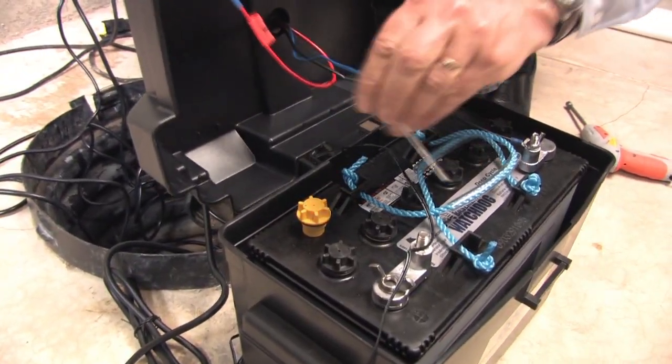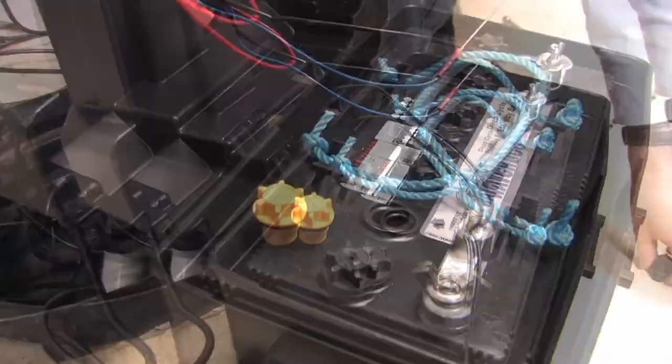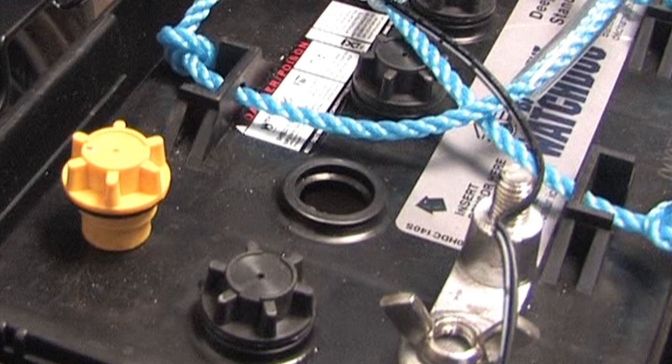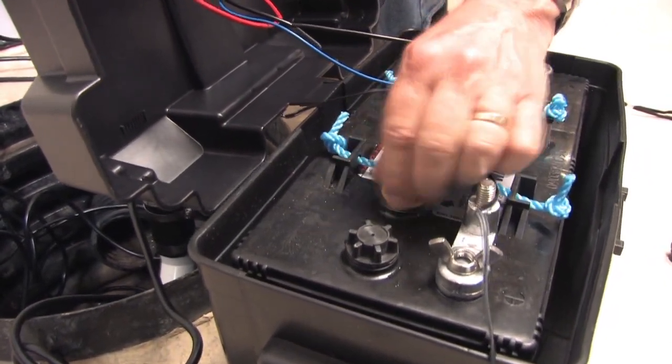To install the fluid sensor in the battery, remove the battery cap from the second cell from the positive post. An arrow on the top of the battery marks this position. Replace it with a yellow cap that's provided in the Basement Watchdog package.